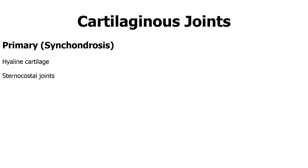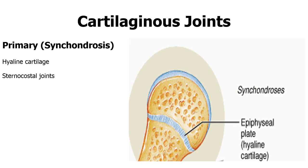For cartilaginous joints, they can be primary or secondary. A primary cartilaginous joint is called a synchondrosis — there is hyaline cartilage between the two bones. The best example is the joint between the ribs and the sternum, the sternocostal joint. Another example is the epiphysial growth plate before fusion occurs, where you have bone on one side, bone on the other, and hyaline cartilage in between — so the epiphysial growth plate is an example of a synchondrosis.